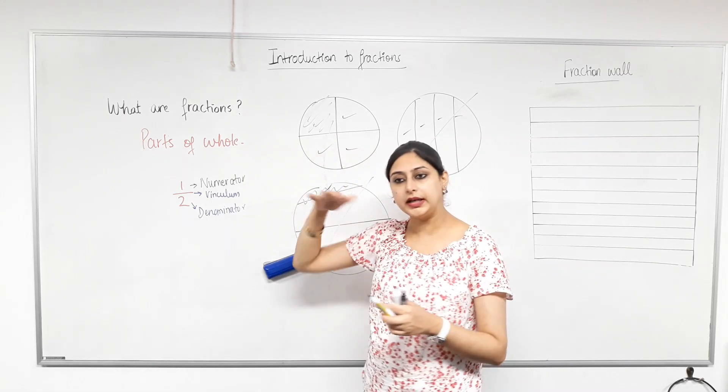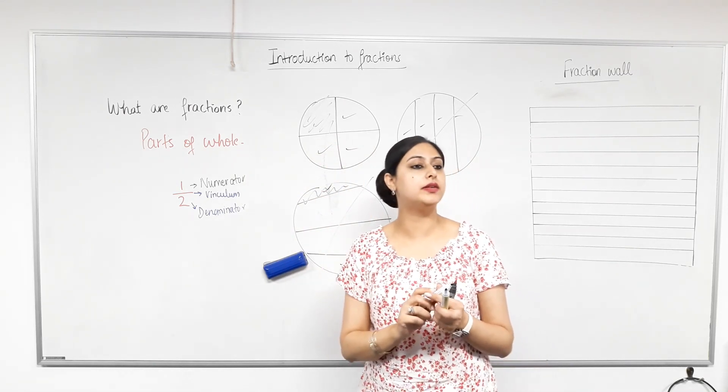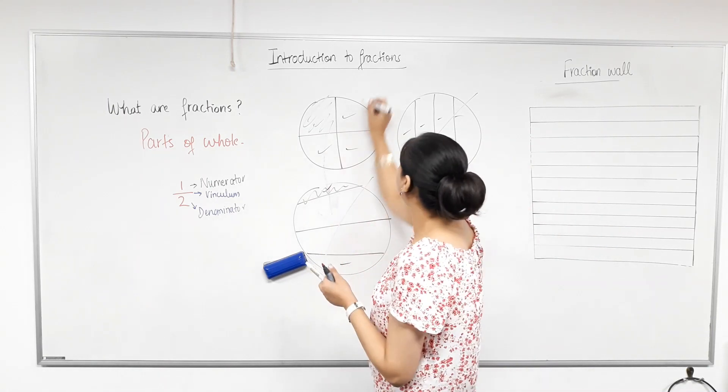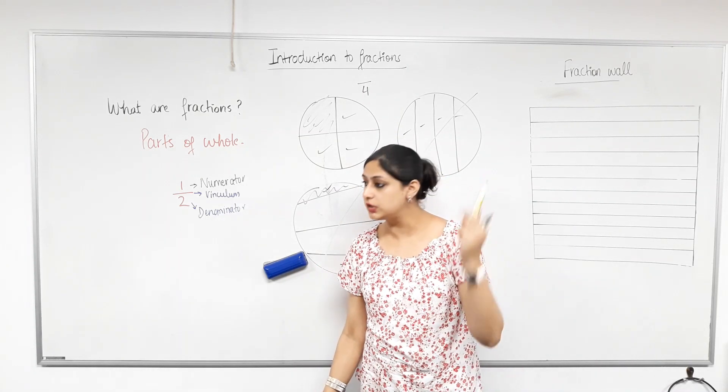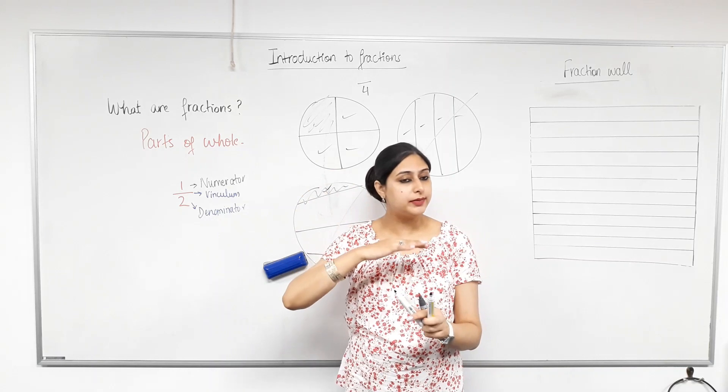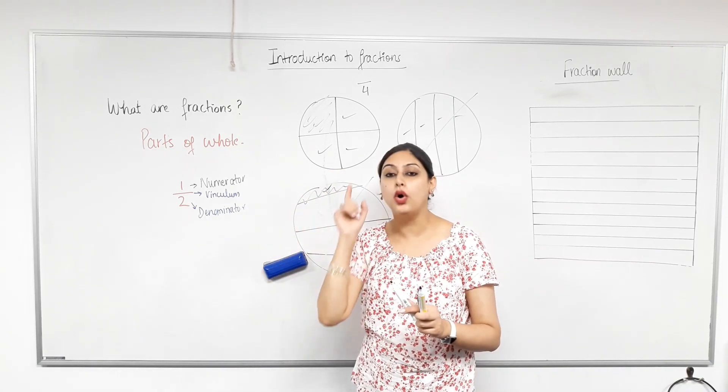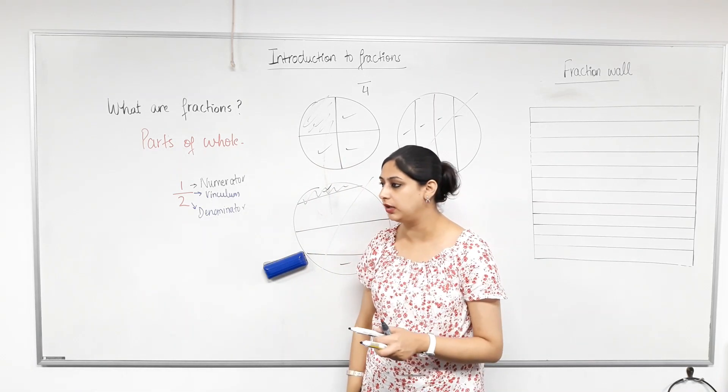Now, is this one properly cut? Yes. So how many equal parts have you divided the whole pizza into? Four. Four. So the bottom number will be four. So the number that is called the denominator that's below the vinculum is the number of equal parts your whole has been divided into. Do we understand the denominator now? Yes.